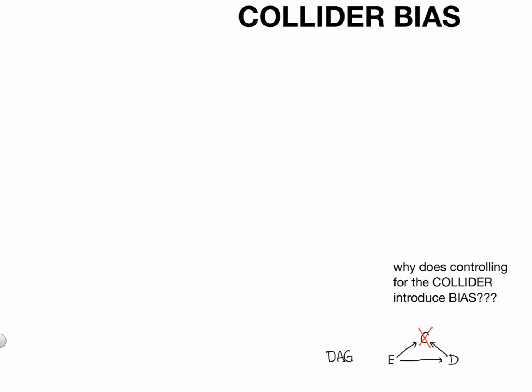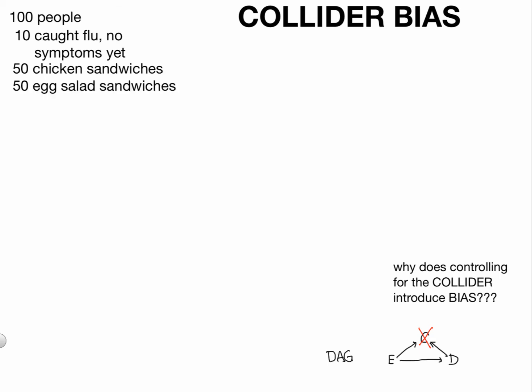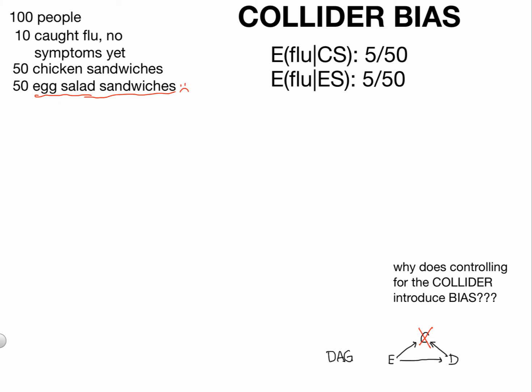Let's begin with a hypothetical situation. You start with 100 people. Of these 100 people, 10 caught the flu but have no symptoms yet. These asymptomatic people all go to a convention. At this convention, they serve 50 chicken sandwiches and 50 egg salad sandwiches. And the egg salad sandwiches, as is often the case in epidemiology, are tainted.